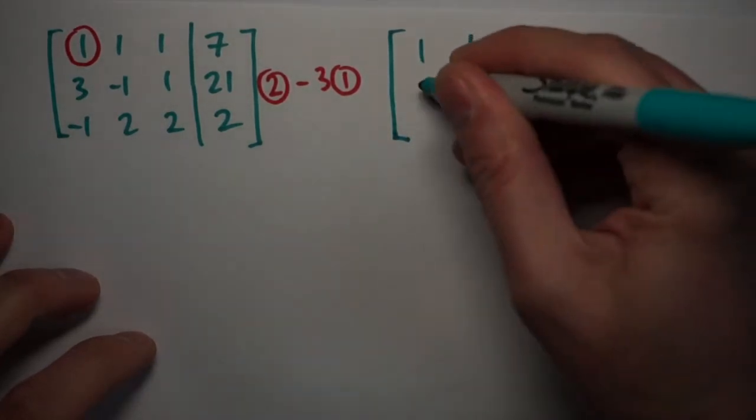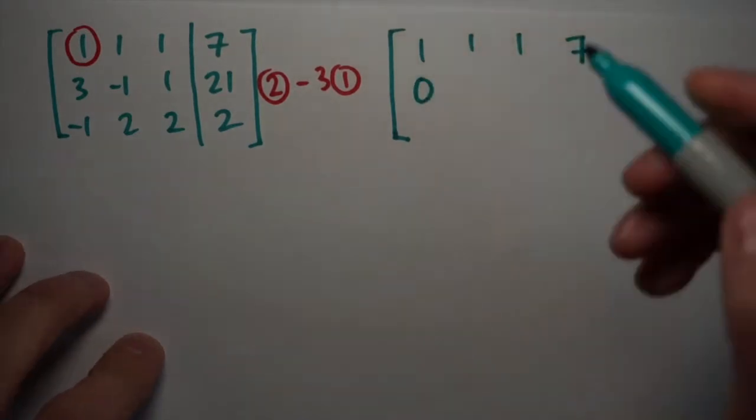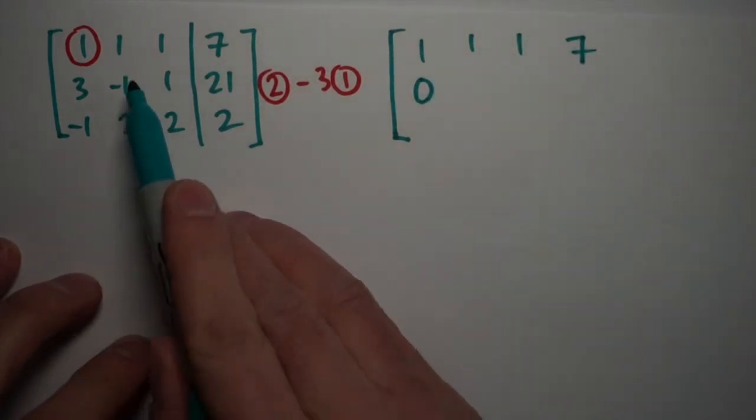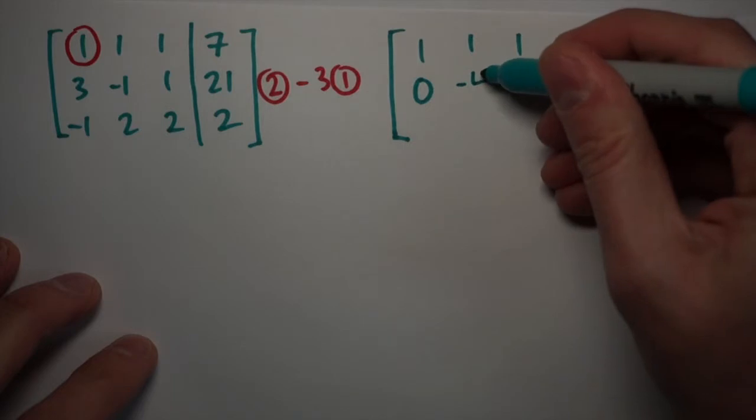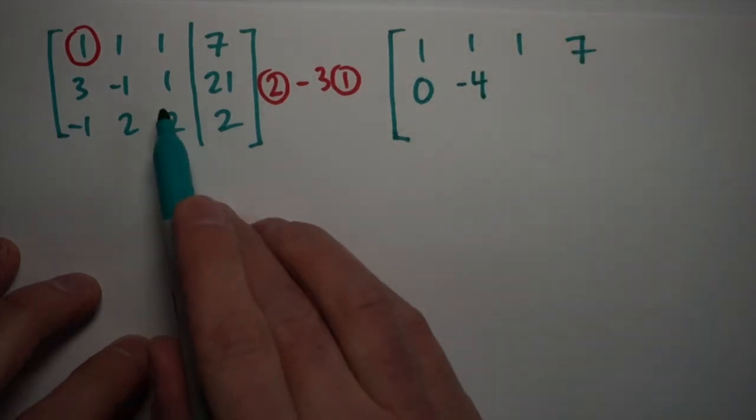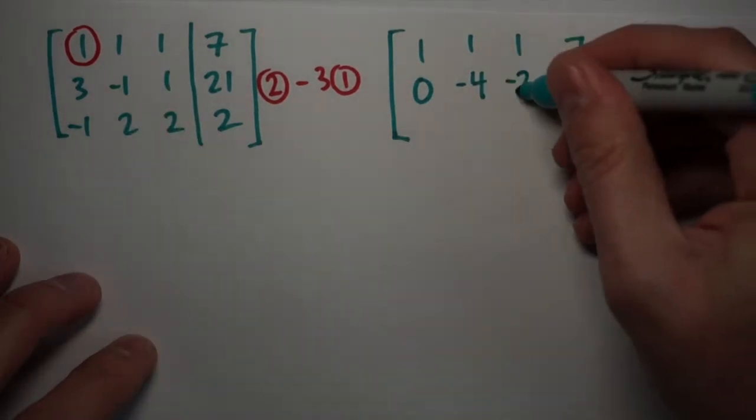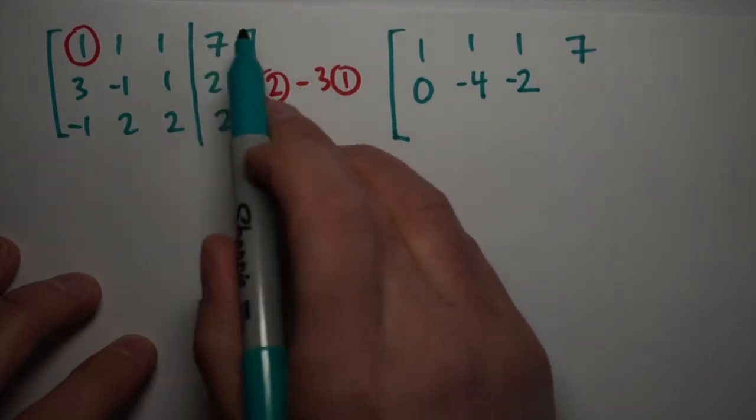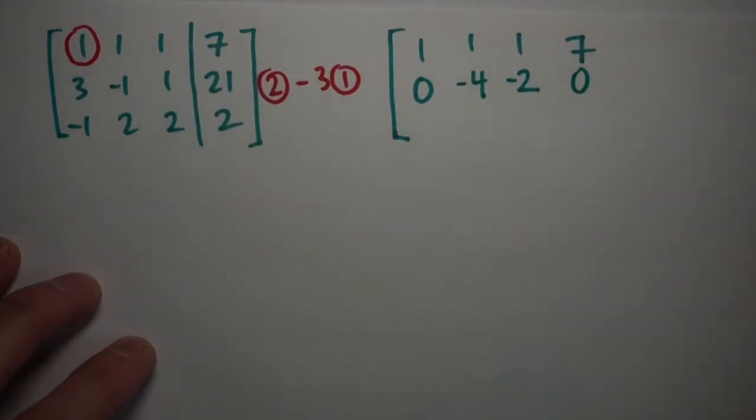So my first row doesn't change: one, one, one, seven. My second row becomes zero, because three minus three times one is zero. Negative one minus three times one is negative four, and one minus three times one is negative two. Twenty-one minus three times seven, twenty-one minus twenty-one is zero. So my second row becomes this.